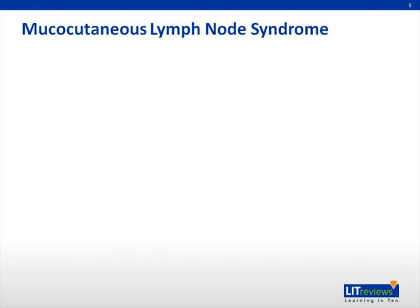Kawasaki disease is one of the most common vasculitides of childhood, and it is named after Dr. Tamasaku Kawasaki, who first described the illness in 1967. Kawasaki disease, or KD, was formally called mucocutaneous lymph node syndrome. It is a vasculitis that predominantly affects the medium-sized arteries, and its diagnosis is based on the presence of characteristic clinical features.